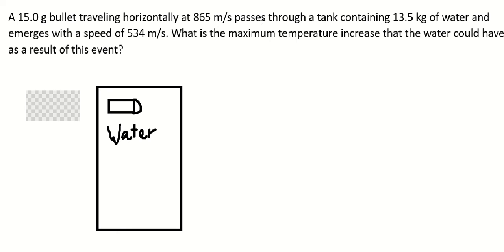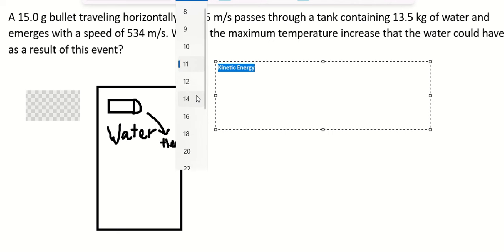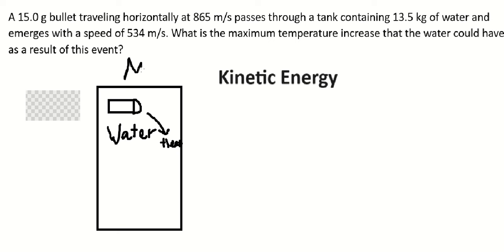After the bullet goes inside the water tank, the new velocity reduces. That means the bullet will transfer heat, which is why the velocity reduces. So we can use kinetic energy. We use this because the bullet is moving, so the kinetic energy will transfer to heat. We have KE after minus KE before to get Q for the water.